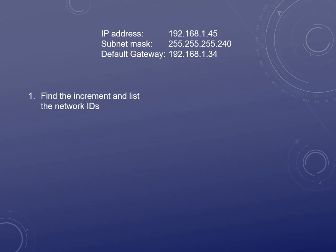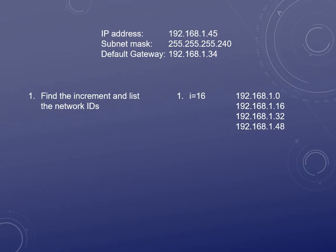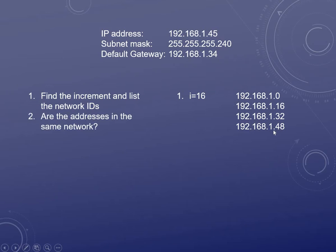First, we have to find the increment of this subnet and list all of the network IDs. Where is the last bit in 240? It's in the 16th place. So we start listing out all of the networks: 192.168.1.0, then we keep going up by 16 until we find the IP address 45. It falls between 32 and 48.